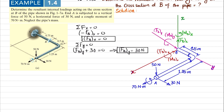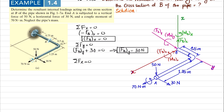The third equation: the sum of all forces along the Z direction must equal zero. Along Z, one force is FBZ and the other is the 50 Newton vertical force. They act opposite to each other, so FBZ minus 50 equals zero. Therefore FBZ equals 50 Newton.